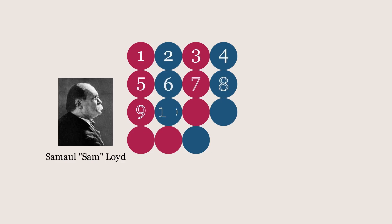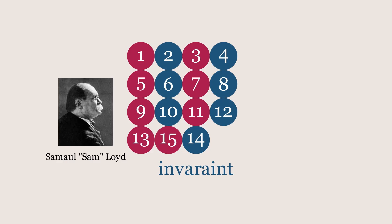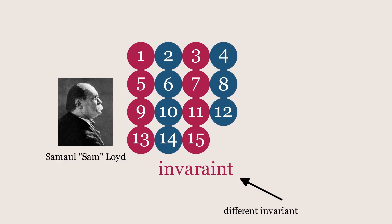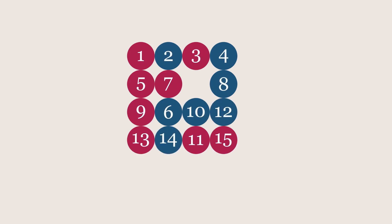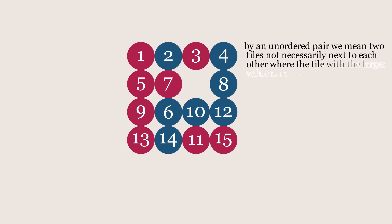Now, back to Lloyd and his puzzle. We want to show that there exists some invariant value that doesn't change when we slide tiles around, and when calculated for the 14-15 setup, the value will be different to that of the original. To do that, let's look at the possible ways to change the state our puzzle can be in, starting from a random position. As a first step in finding such an invariant, we will keep track of how many unordered pairs of tiles there are in our setup.